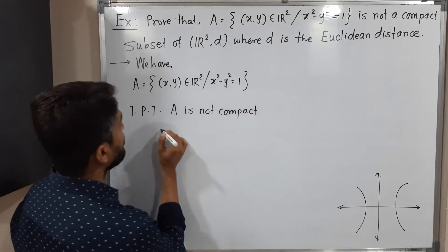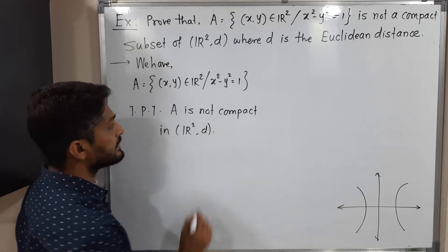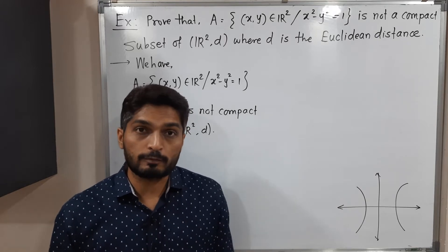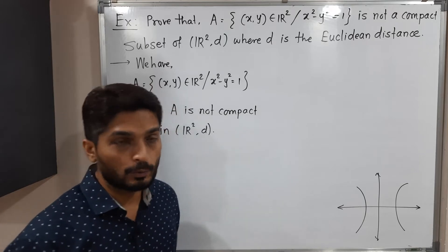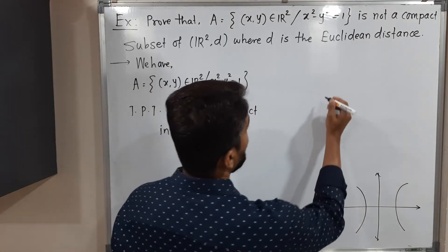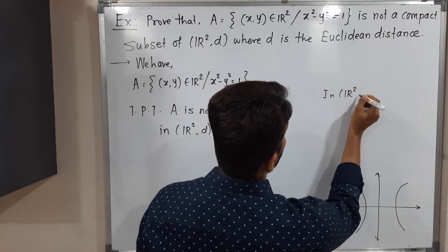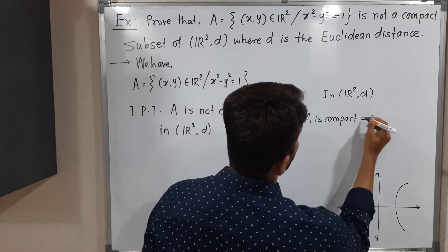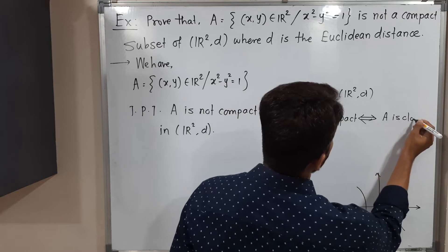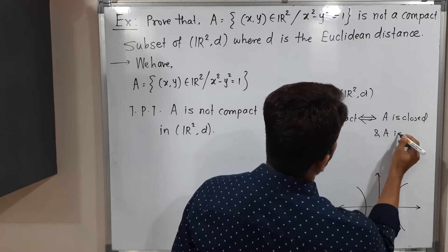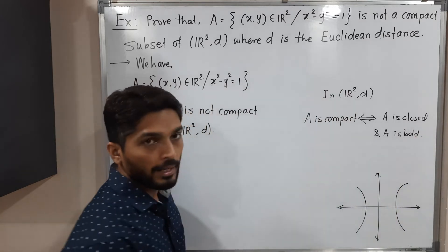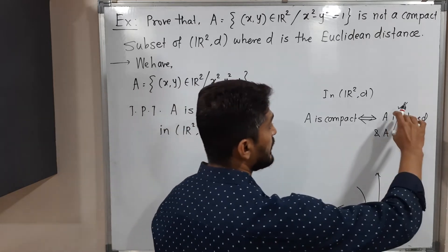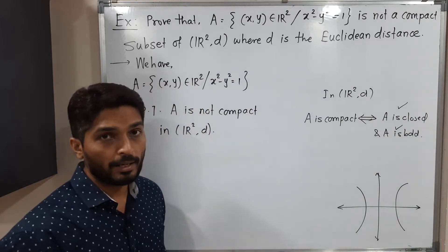We have to prove that A is not compact in R2. When we say a set is compact, if every open cover has a finite sub-cover, then we say the set is compact. This is the definition of a compact set. But there is one more result, specifically in Rn — in R2, that result is: A is compact if and only if A is closed and A is bounded. So if A is compact, then it is closed and bounded. As well as if A is a closed and bounded subset of R2, then also you can say it is compact.